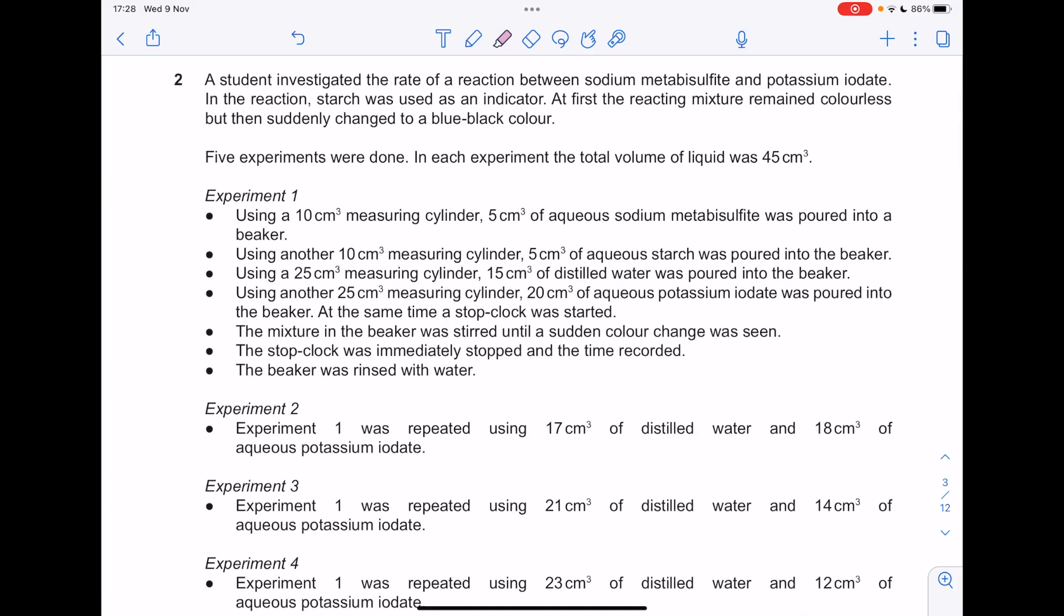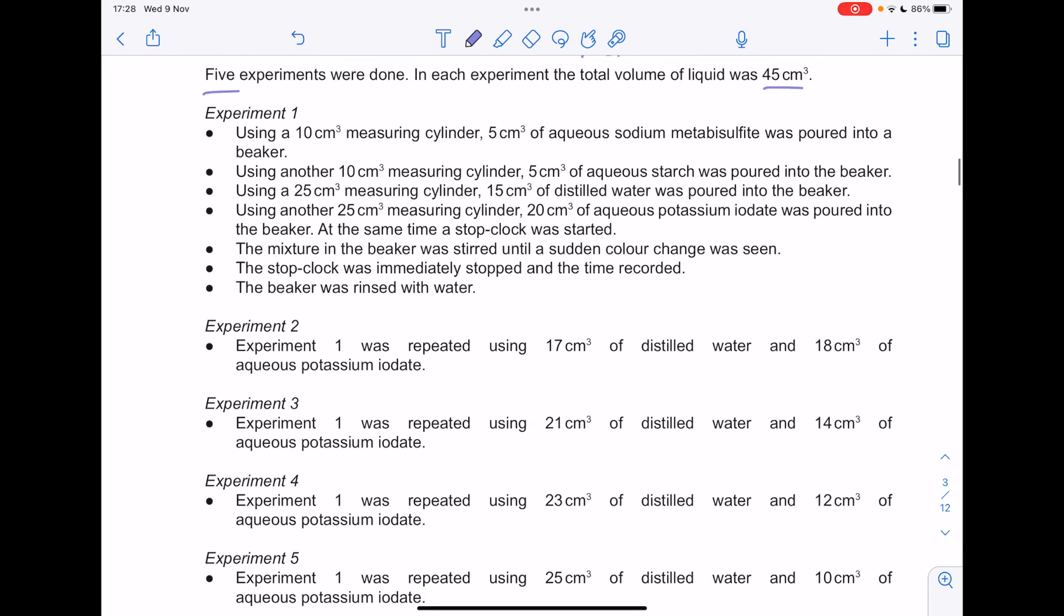I've soon investigated the rate of reaction between sodium metabisulfite and potassium iodate. In the reaction, starch was used as an indicator. At first the reaction mixture remained colourless, but then suddenly it changed to a blue-black colour. That means that starch is present. Five experiments were done. In each experiment, the total volume of liquid was 45 centimetres cubed.